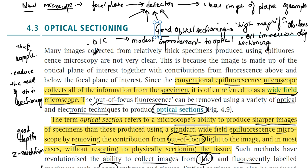The second method to improve optical sectioning is fluorescence microscopy. In fluorescence microscopy, objects out of the focal plane only interfere with the image if they are illuminated and fluoresce. This adds an extra way to improve optical sectioning by making the illumination more specific to the focal plane.